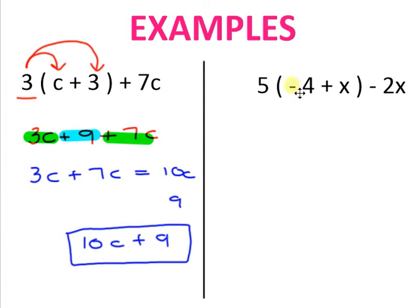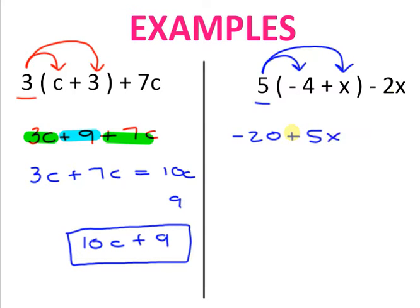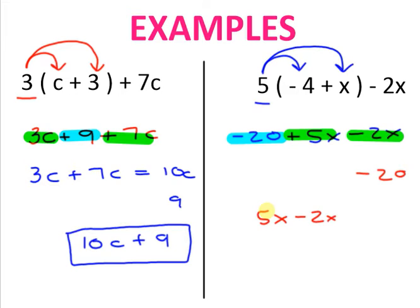The next one has some negatives. Identify your parentheses — they're right here, and here's the term on the outside. Distribute: 5 times negative 4 is negative 20, and 5 times x is positive 5x. Bring down the rest: minus 2x. Finding like terms: negative 20 can't combine with anything. 5x minus 2x is 3x. Variables come before constants, so the final answer is 3x minus 20.